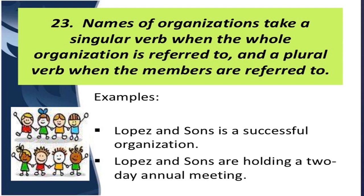Next rule: names of organizations take a singular verb when the whole organization is referred to, and a plural verb when the members are referred to — similar to collective nouns. For example, 'Lopez and Sons is a successful organization' — working as one whole, so singular. But 'Lopez and Sons are holding a two-day annual meeting' — talking about the members, so plural verb. It depends on the usage.